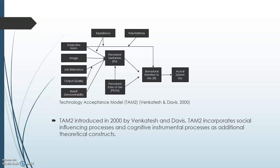In 2000, Venkatesh and Davis added some theoretical constructs to the Technology Acceptance Model. The revised model is referred to as TAM-2. These constructs included interrelated social influence processes and cognitive instrumental processes. The social influence processes were defined by subjective norms, voluntariness, and image.